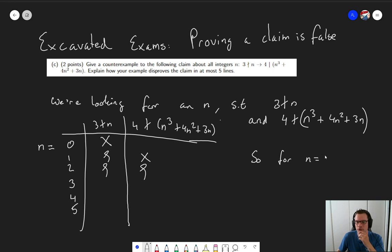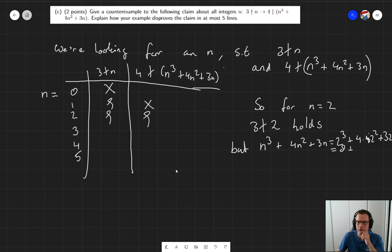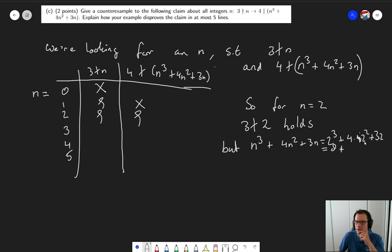So for n equals 2, 3 does not divide 2 holds. But n to the third plus 4n squared plus 3n equals 2 to the third plus 4 times 2 squared plus 3 times 2 equals 8 plus 16 plus 6 is 30. And 4 does not divide 30. So n equals 2 is a counter example. And so we have shown that the claim is false.